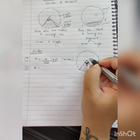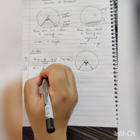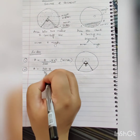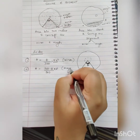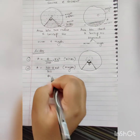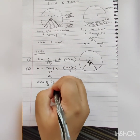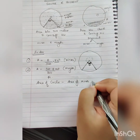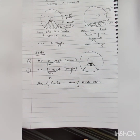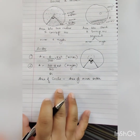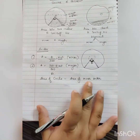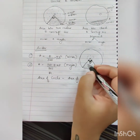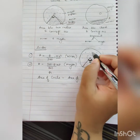For major sector, there are two ways. Either use Area = (360 − θ)/360 × π r², or subtract the area of the minor sector from the area of the circle. So: Area of major sector = Area of circle − Area of minor sector. You can use either method; both give the same answer.